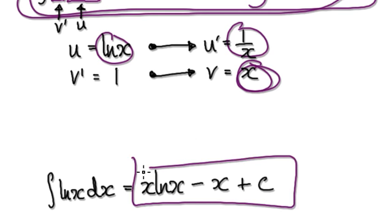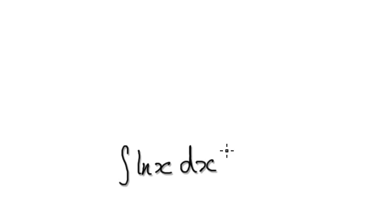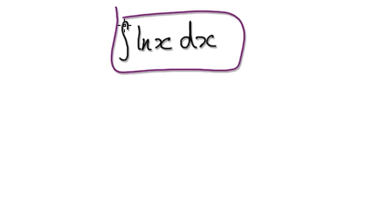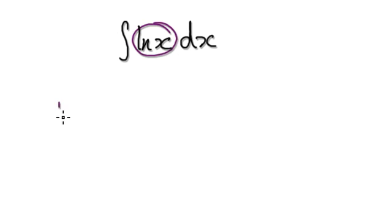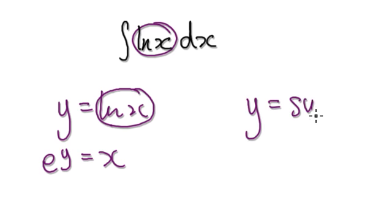Now I'm going to ask you to use our new method — the method shown in the previous two videos. You start out by letting this whole thing be y. Because this is an inverse, you can easily jump to: e to the power of y equals x, when you have an inverse like this.